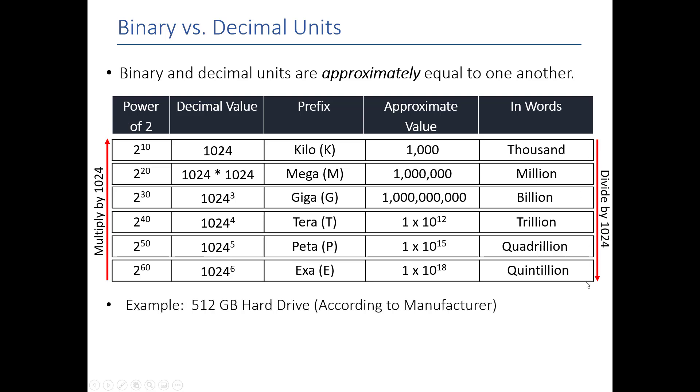So, let's do an example here. If you go to Best Buy and you buy a 512 gigabyte hard drive, if you ever go on your computer and look, you would not see 512 gigabytes exactly. It would be a slightly smaller unit.